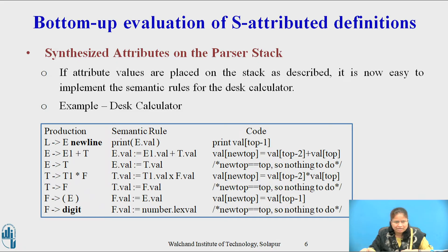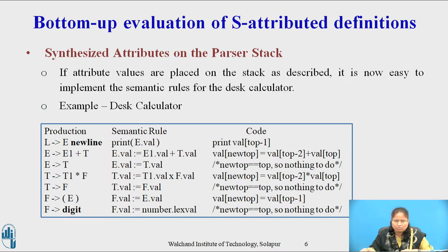For the production E → E1 + T, the semantic rule is E.val = E1.val + T.val and the code is val[ntop] = val[top-2] + val[top]. For the production E → T, the semantic rule is E.val = T.val and there is no code; we simply set ntop = top.